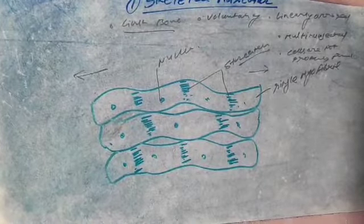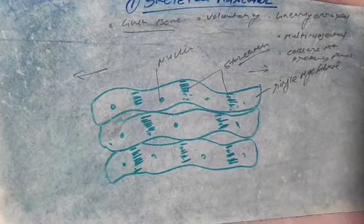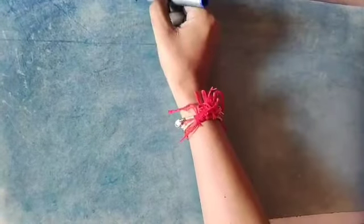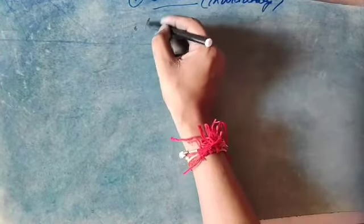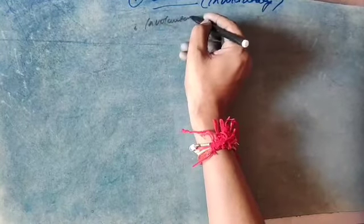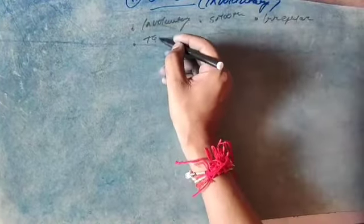It is common in all kinds of vertebrates. Now back to the smooth muscle fiber. Smooth muscle fibers: they are unstriated and involuntary in nature. The arrangement is irregular and they have a tapering end.